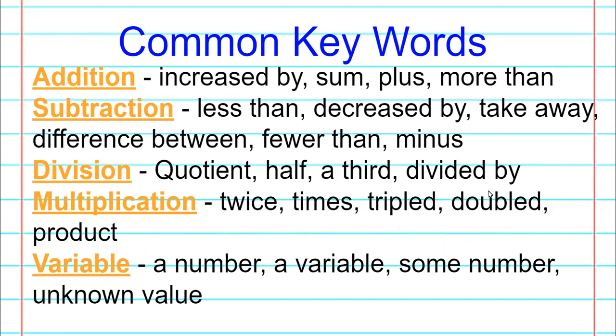And then variable. In a word problem, it's not going to say a variable. I mean, it could, but it might say a number or some number or an unknown value. And that would be a hint that you need to use a variable. You can pick a number for that variable. So make sure you press pause. Make sure that you are writing all of this down.